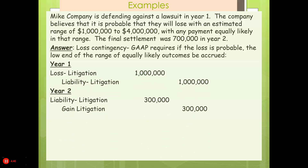In year two, since we only paid $700,000, we're going to take the balance of $300,000 off the books and book a gain litigation, which would be part of other revenue.